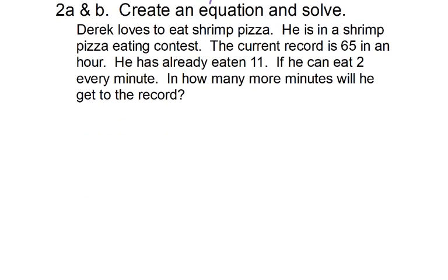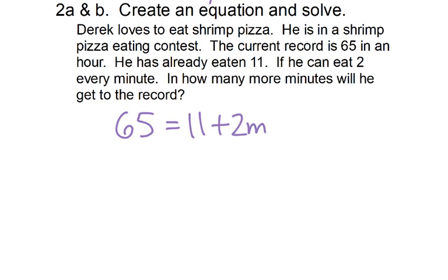Creating the equation and solving: Derek loves to eat shrimp pizza. He is in a shrimp pizza eating contest. The current record is 65 in an hour. He has already eaten 11. If he can eat 2 every minute, how many more minutes will it take to get to the record? So he needs to get to at least 65. He's already eaten 11, and then he's going to add 2 for every minute — so that's what your equation should look like.